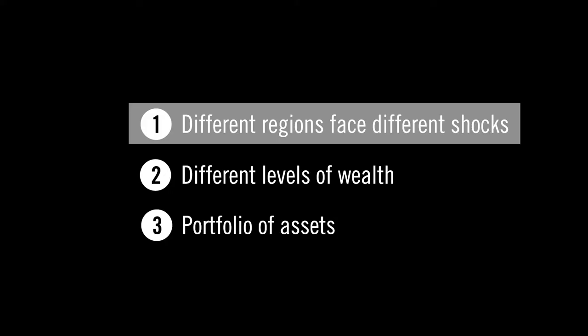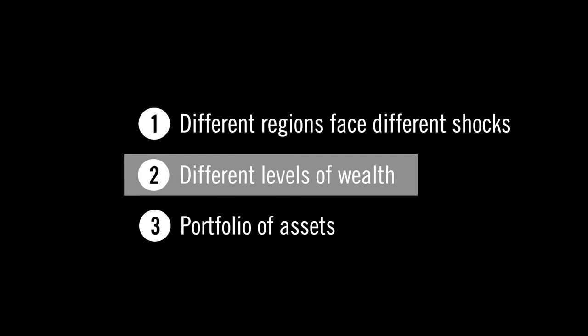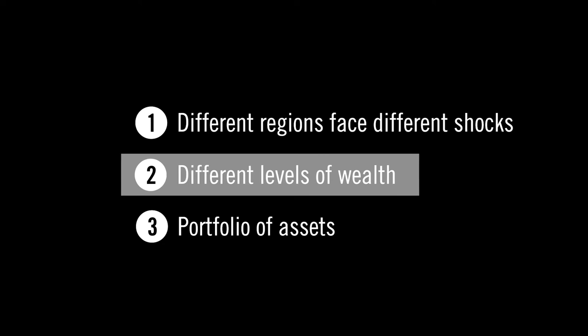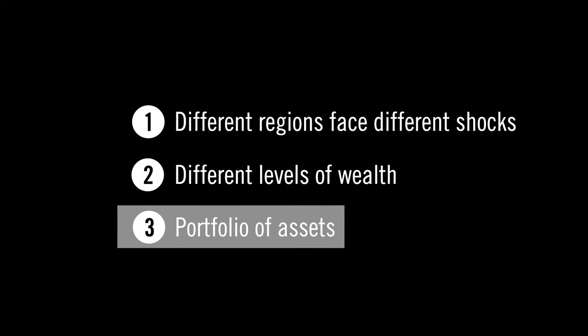The second factor would be differences in the level of wealth. When confronted with a shock, you can deplete assets in the short run to cope, but it's also the portfolio of assets that matters. People may respond to a drought by moving their herd, but that may not work in situations where there's a lot of conflict in a region — moving your herd around is not an option. So you might need other coping strategies like relying on remittances or relying on your neighbours.